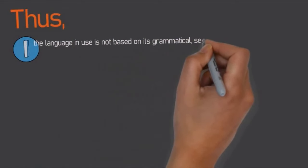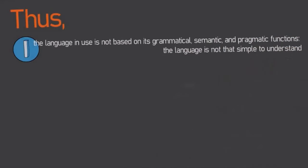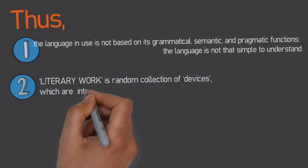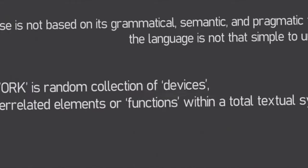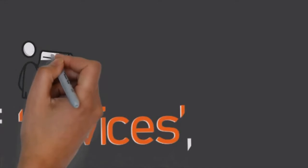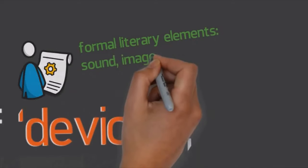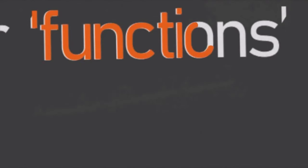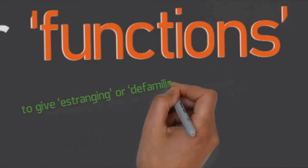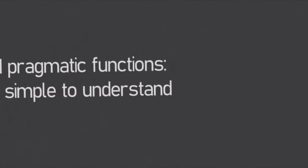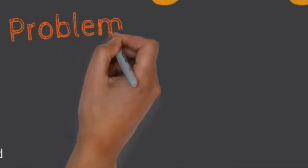This is because the language in use is not based on its grammatical, semantic, and pragmatic functions — so it is not easy to understand. The product of literature, called literary work, is a combination of devices that contain functions of their own. These devices are tools — the formal literary elements like sound and imagery — whose function is to give a special effect that is estranging and defamiliarizing, making the text look or sound different from the usual.